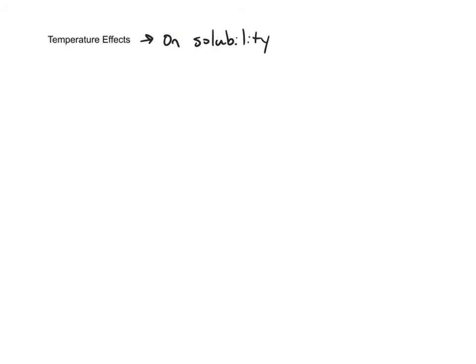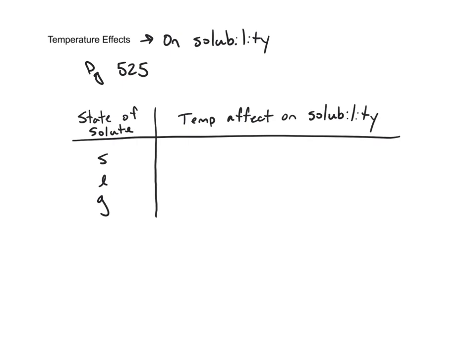Let's talk about the effects that temperature has on solubility. For solids and liquids as solutes, when the temperature of the solvent goes up, you can dissolve more solute. The amount depends on the solute, but for the most part, as the temperature increases, more solute can be dissolved — up to a certain point, beyond which even the highest temperatures won't allow more solute to dissolve. Page 525 in the textbook outlines this concept nicely.